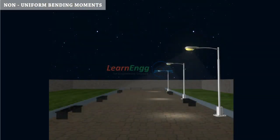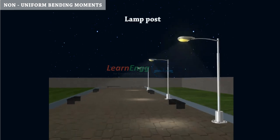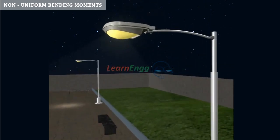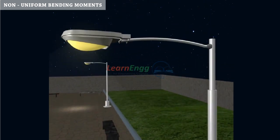Let us see the real-time example of non-uniform bending moments. Now see the 3D model of lamp post. It is a good example for cantilever with concentrated load.